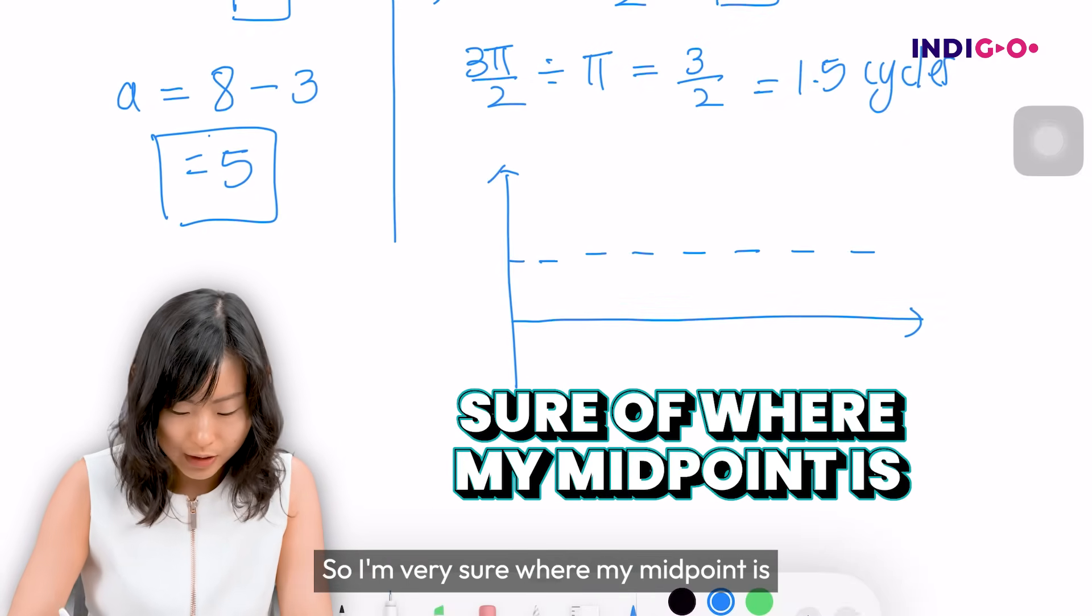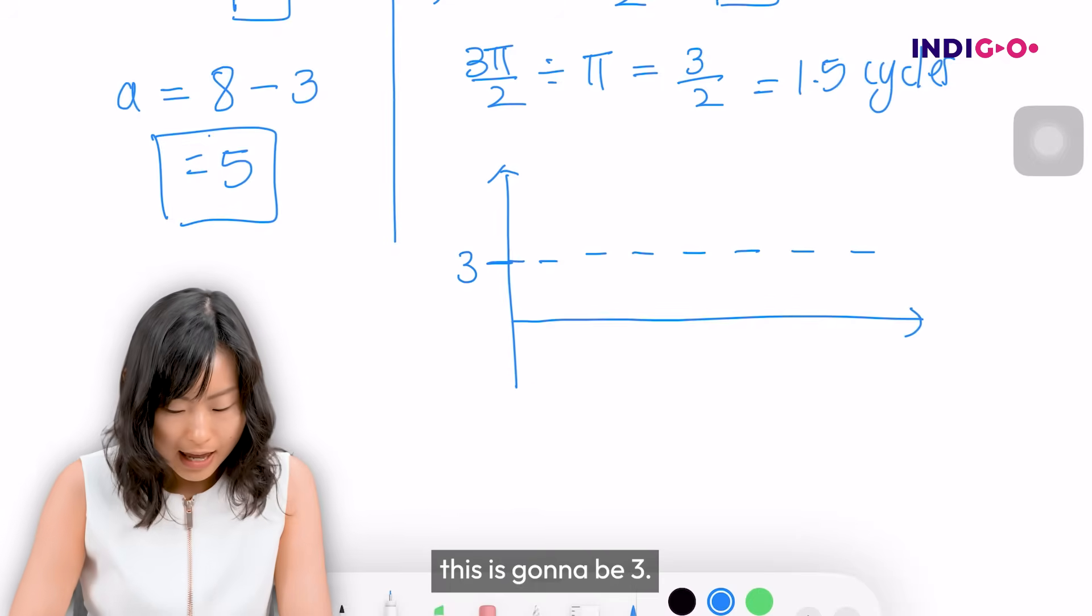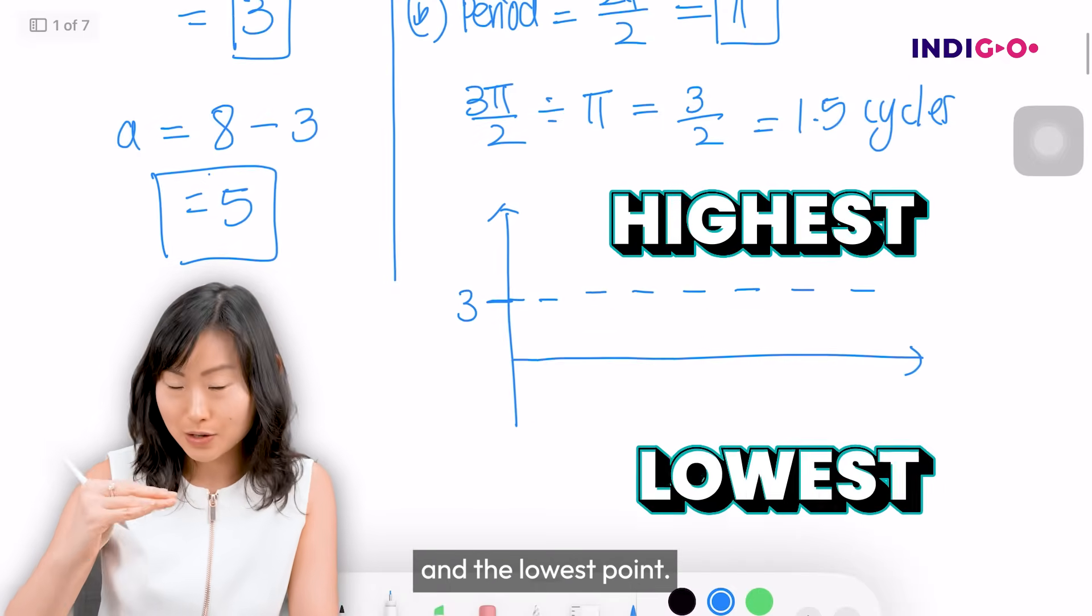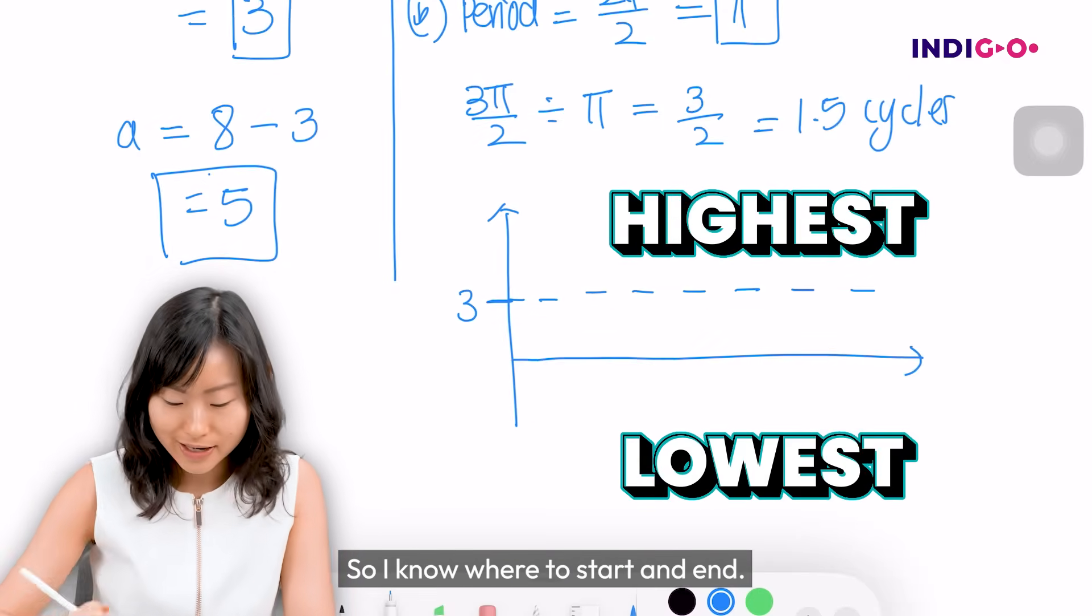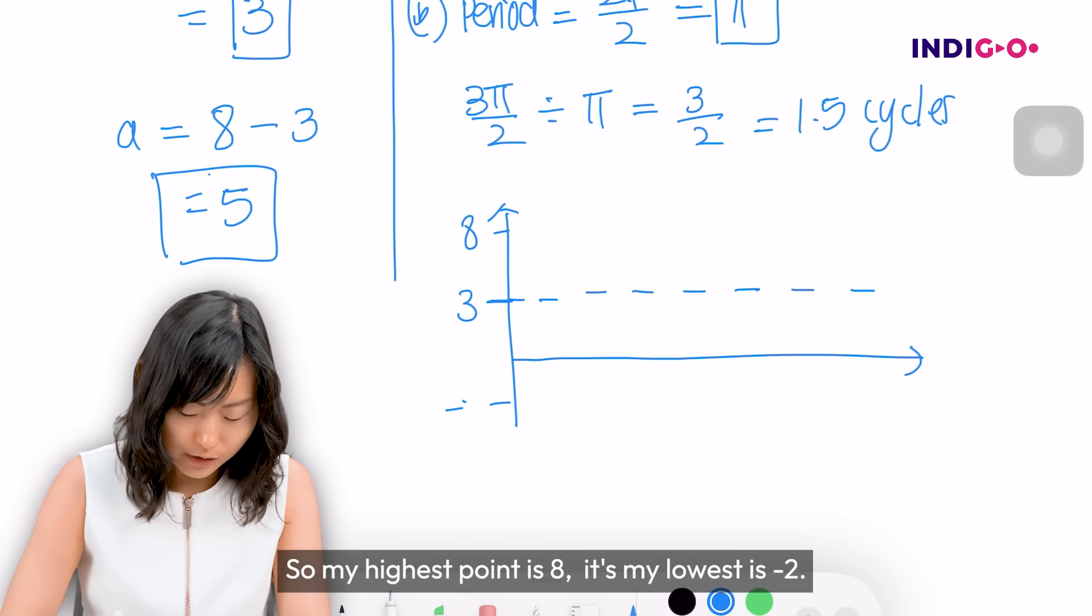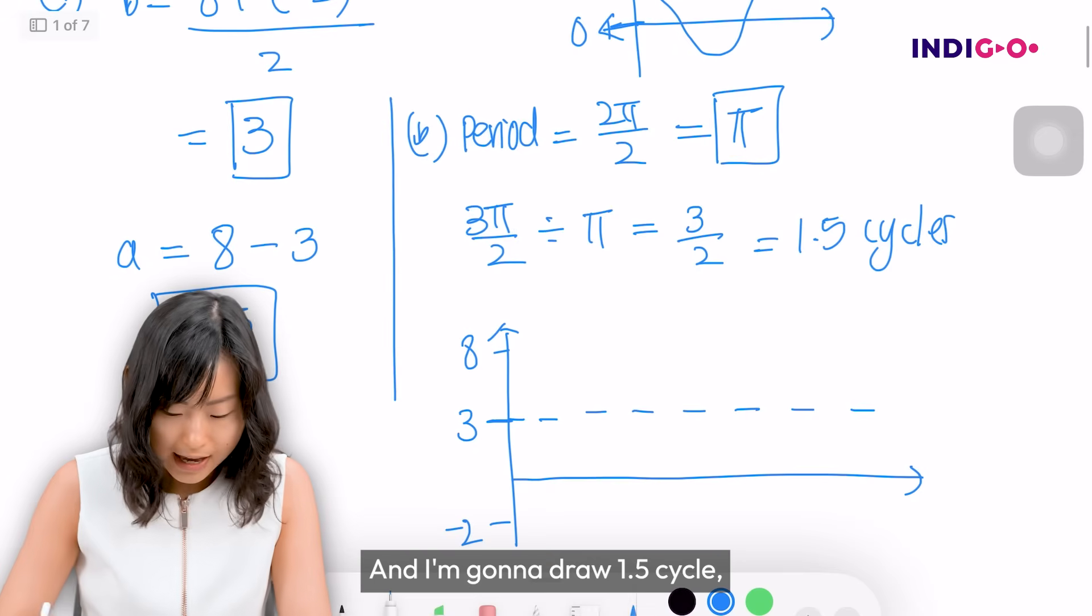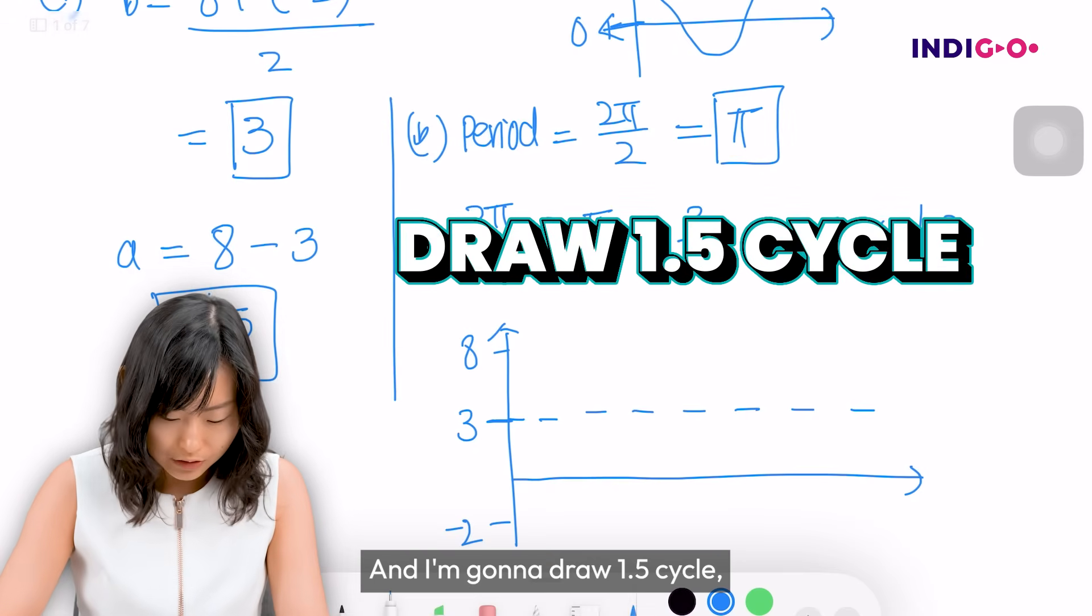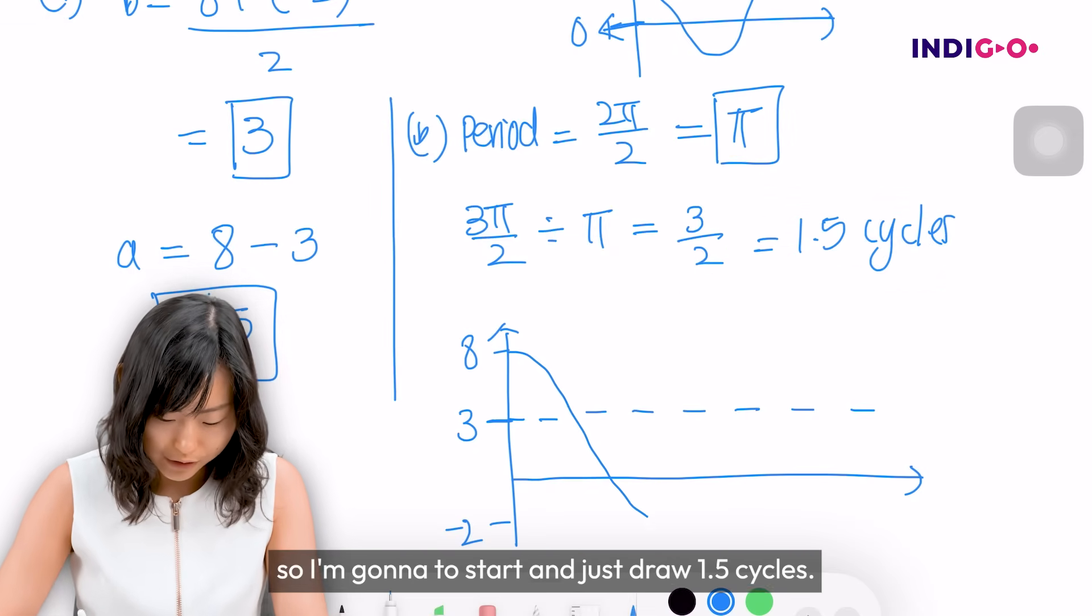So I'm very sure of where my midpoint is. This is going to be 3 and I'll also draw in my highest and lowest points so I know where to start and end. My highest point is 8, my lowest is -2. That's what the question says. I'm going to draw 1.5 cycles. This is one cycle and then I draw another half cycle.